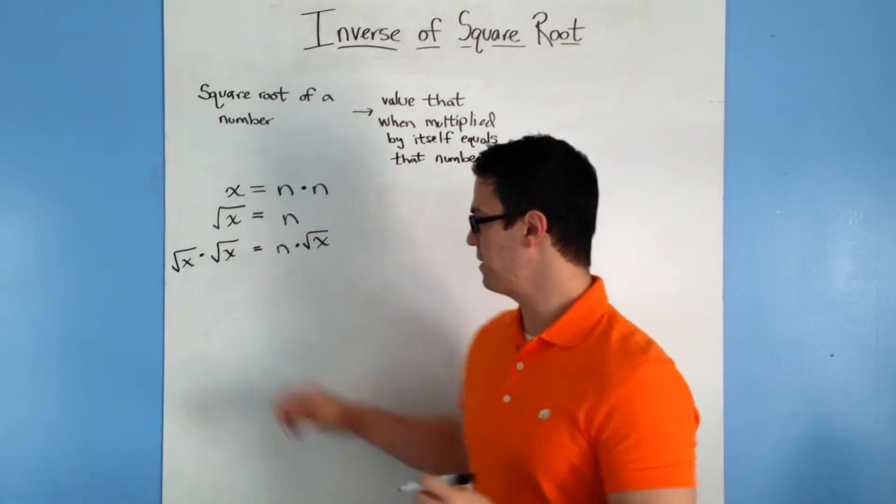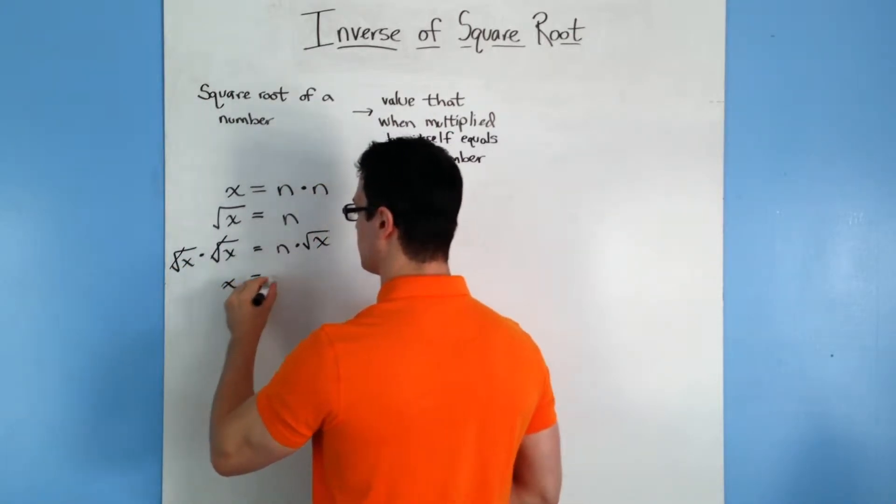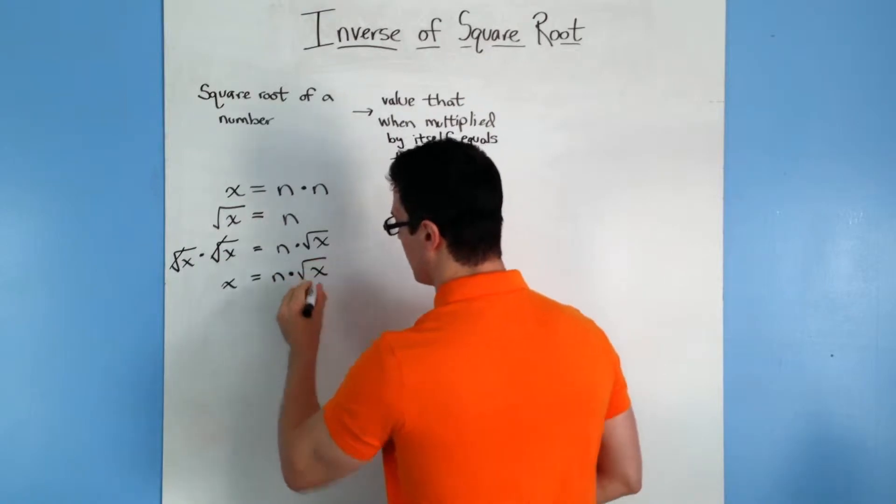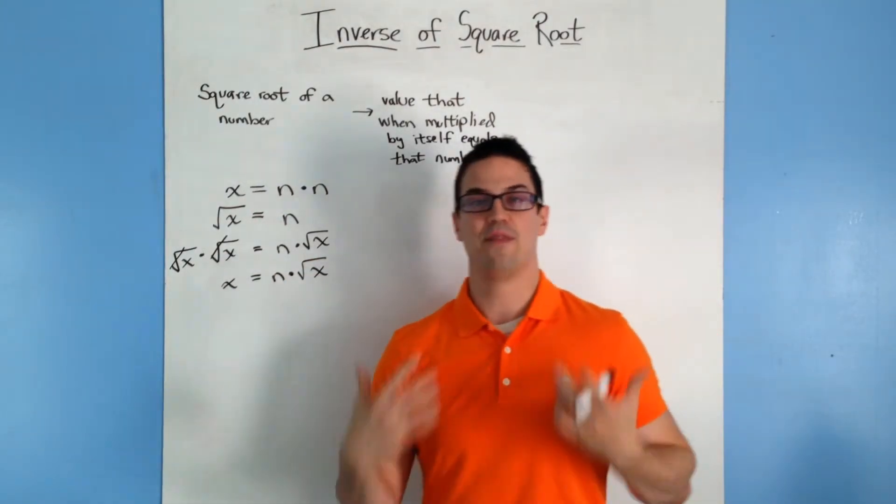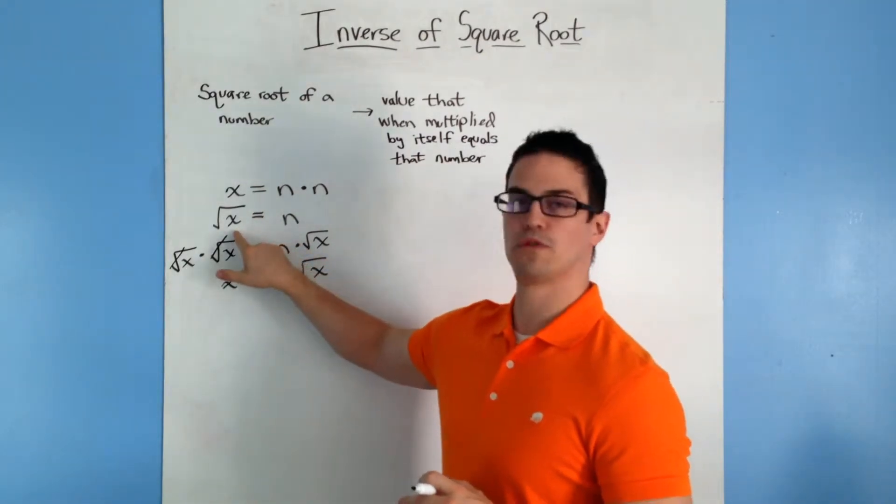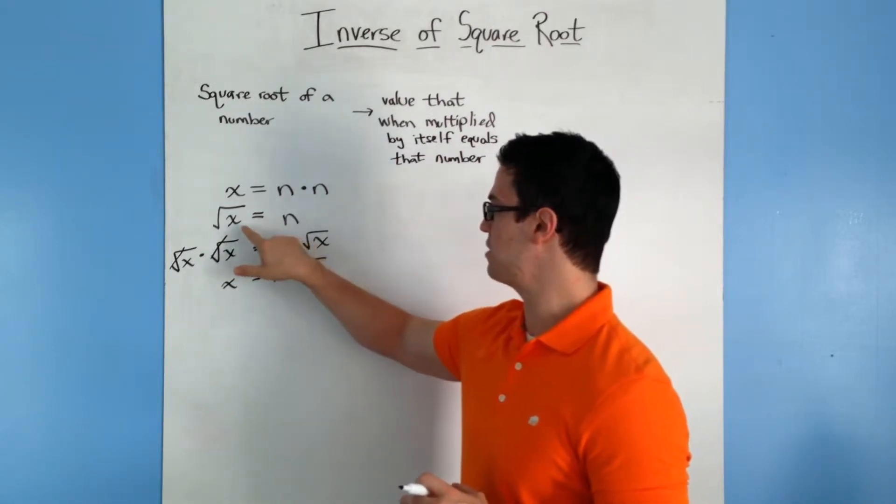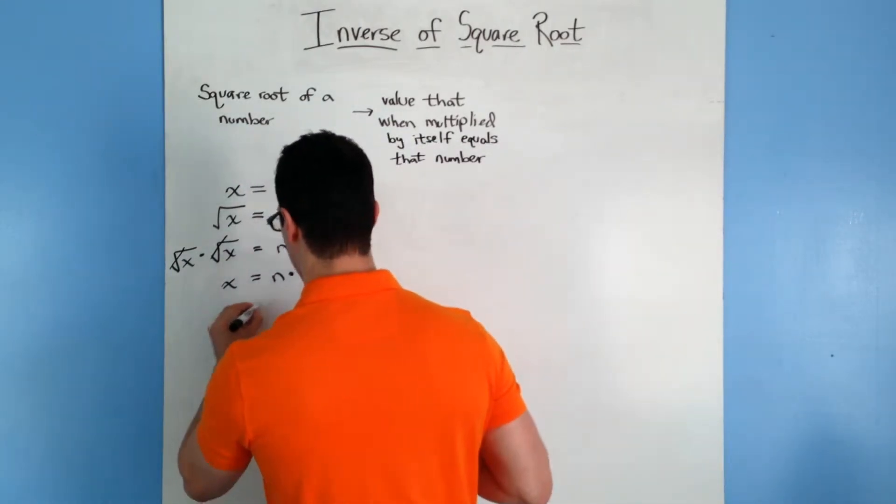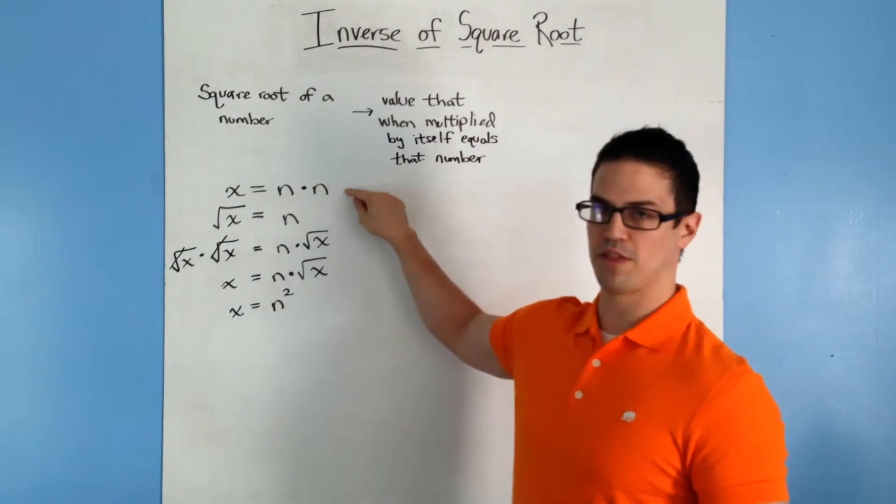Okay, so based on our definition, that means these square root symbols can cancel, and you end up with x is equal to n times the square root of x. Well, we want to solve for x here. We have x on this side, and we have x on this side, and that's a problem. But luckily, this square root of x is equal to n up here. So what I can do is, since I know that square root of x is equal to n, I'm just going to substitute n in for the square root of x, and you end up with x is equal to n squared.